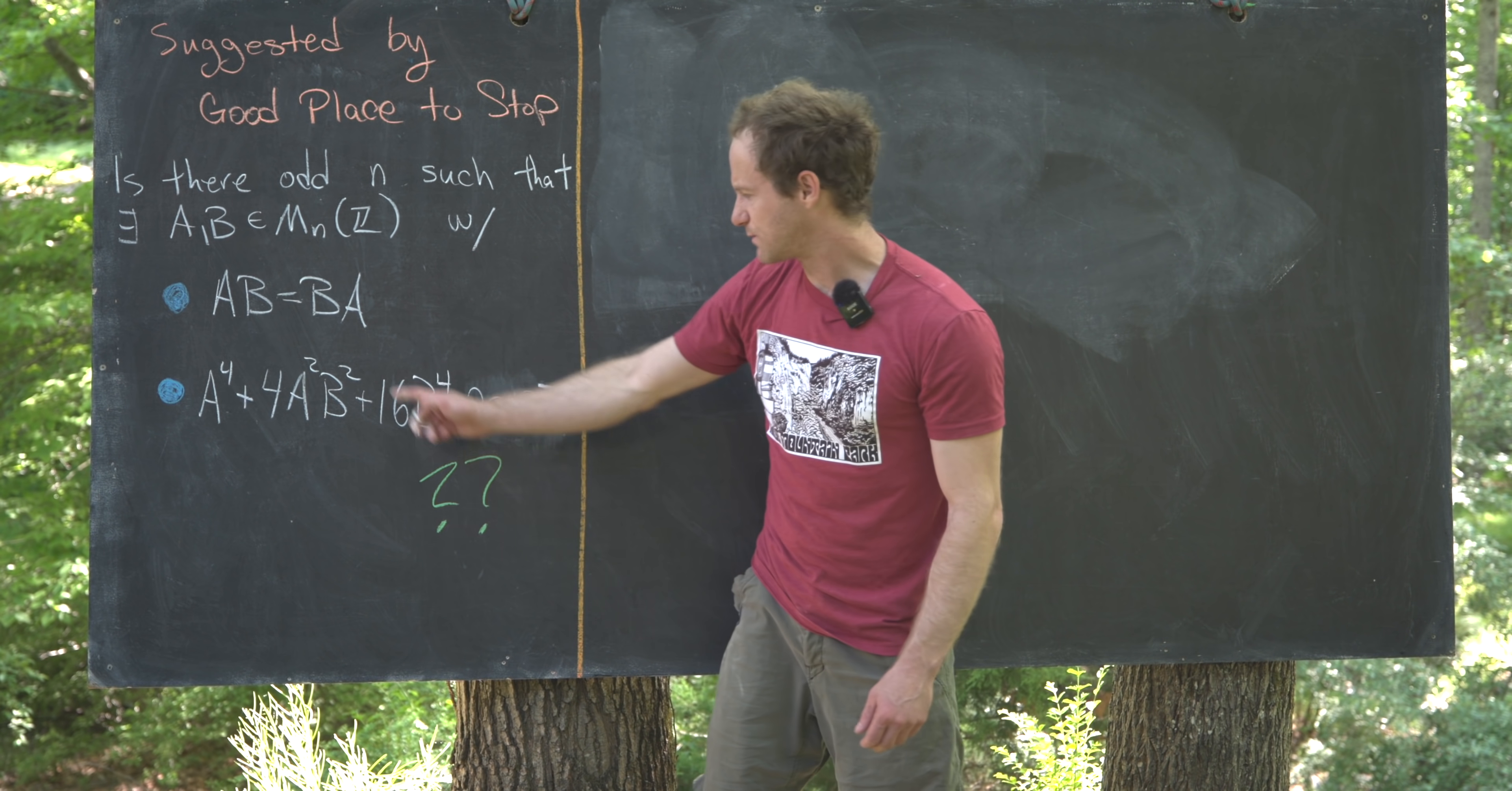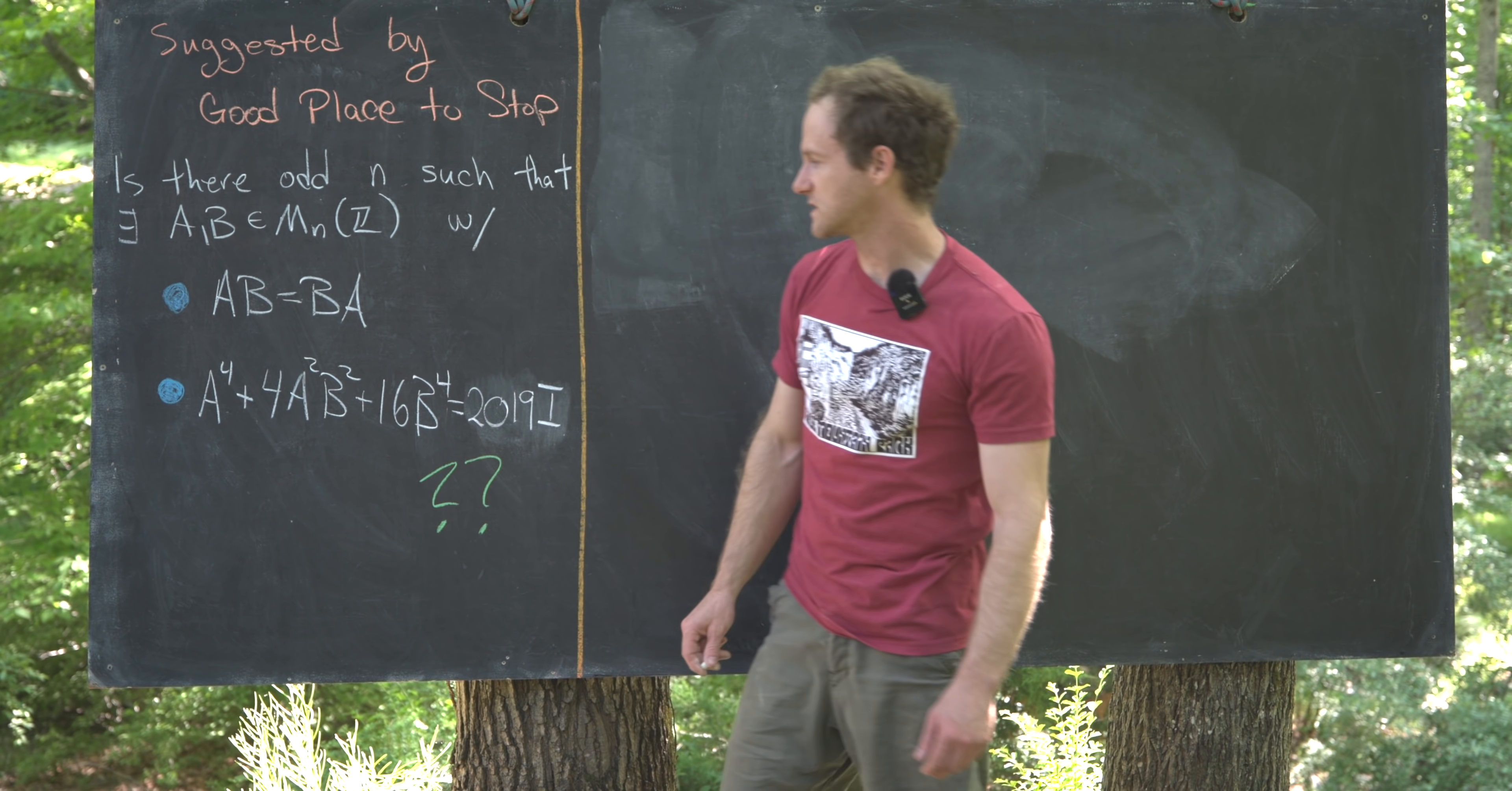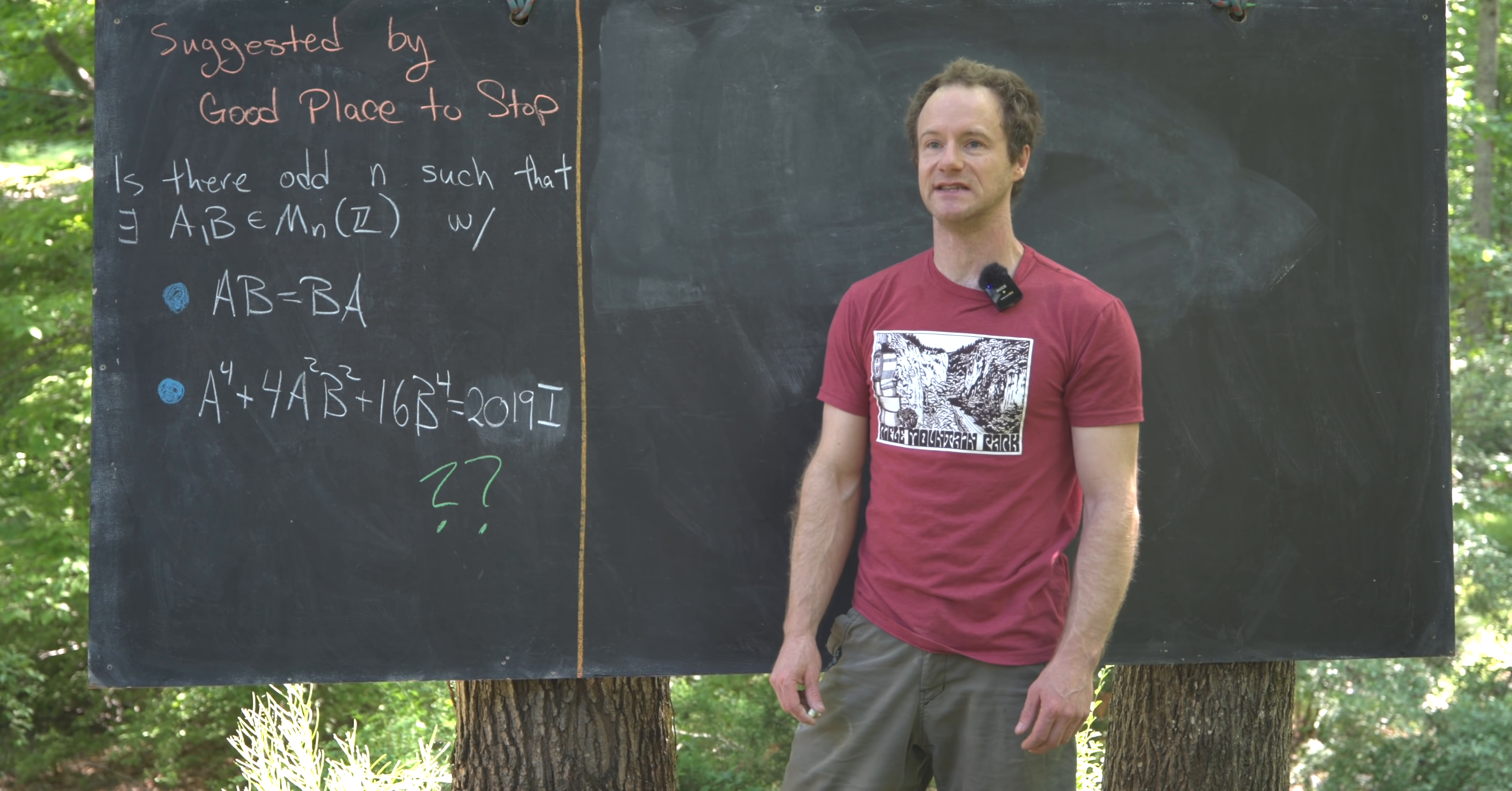And second, we've got this polynomial-type relationship with these matrices. So A to the fourth plus 4A squared B squared plus 16B to the fourth is equal to 2019 times the identity.